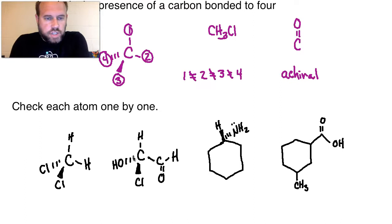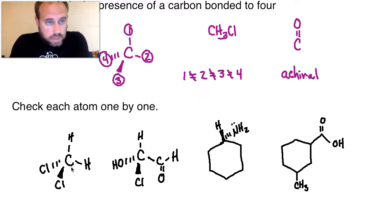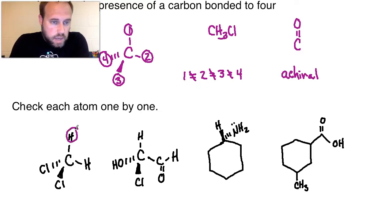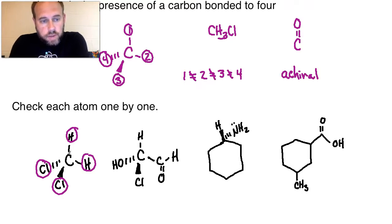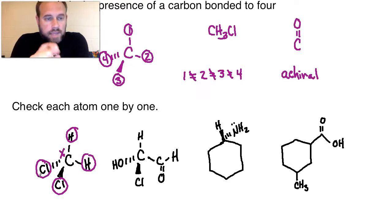Hopefully everybody had a chance to try this out. Looking at the first molecule — the easiest one to tackle because we've only got one carbon present — it should be quite evident that there are two similar groups: hydrogen and hydrogen, and then chlorine and chlorine. Because there are not four unique groups on this carbon, this would not be considered a chiral center. This compound would be classified as achiral.